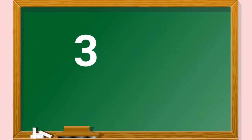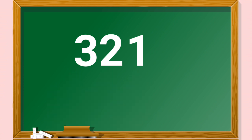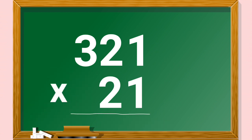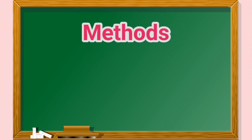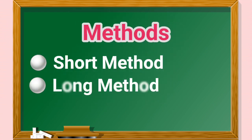In this lesson, we will multiply three-digit numbers by two-digit numbers. And there are different methods to do this: the short method, long method, and lattice method.